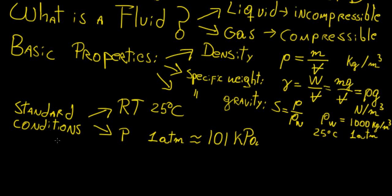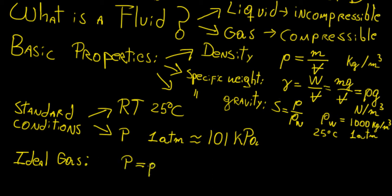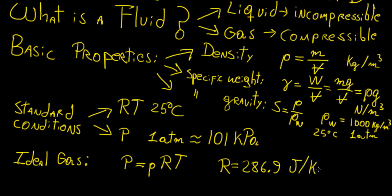The last thing we're going to look at is the ideal gas law. An ideal gas is one in which the separation between gas molecules is large enough that there is literally no attraction between them — we can pretty much ignore any attractive forces completely. For an ideal gas, we have the equation: pressure equals density times the universal gas constant times the temperature in Kelvin. The universal gas constant is 286.9 joules per kilogram per Kelvin.